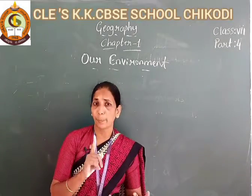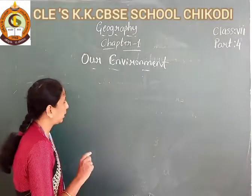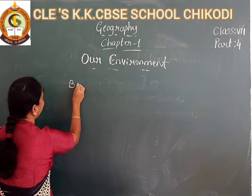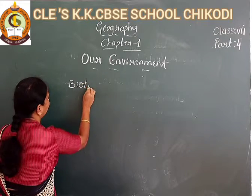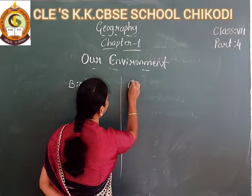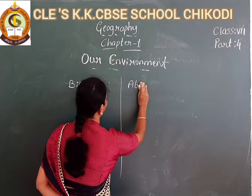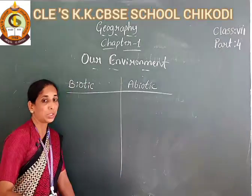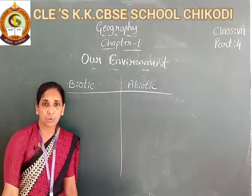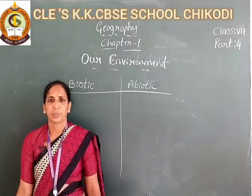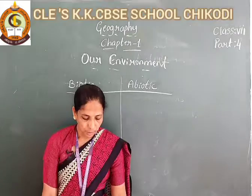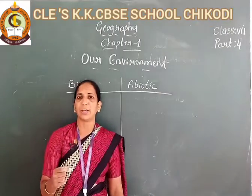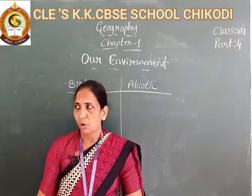Environment comprises two basic components: one is biotic and another is abiotic. Environment is the surroundings where we live, and it comprises the biotic and abiotic surroundings of the organism.